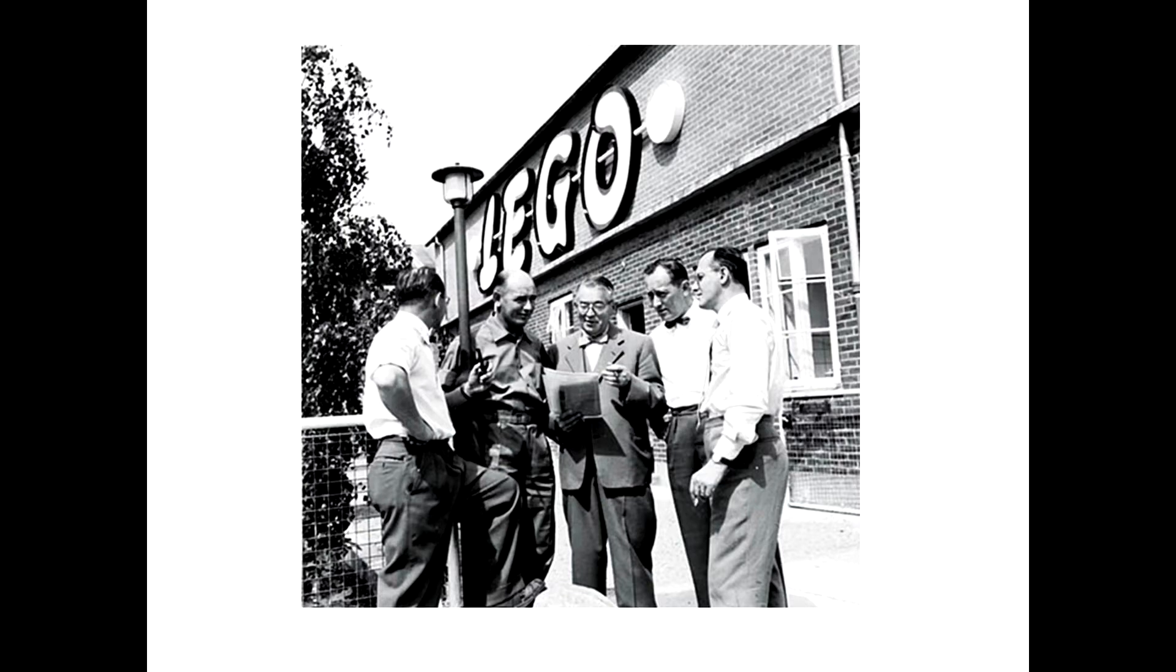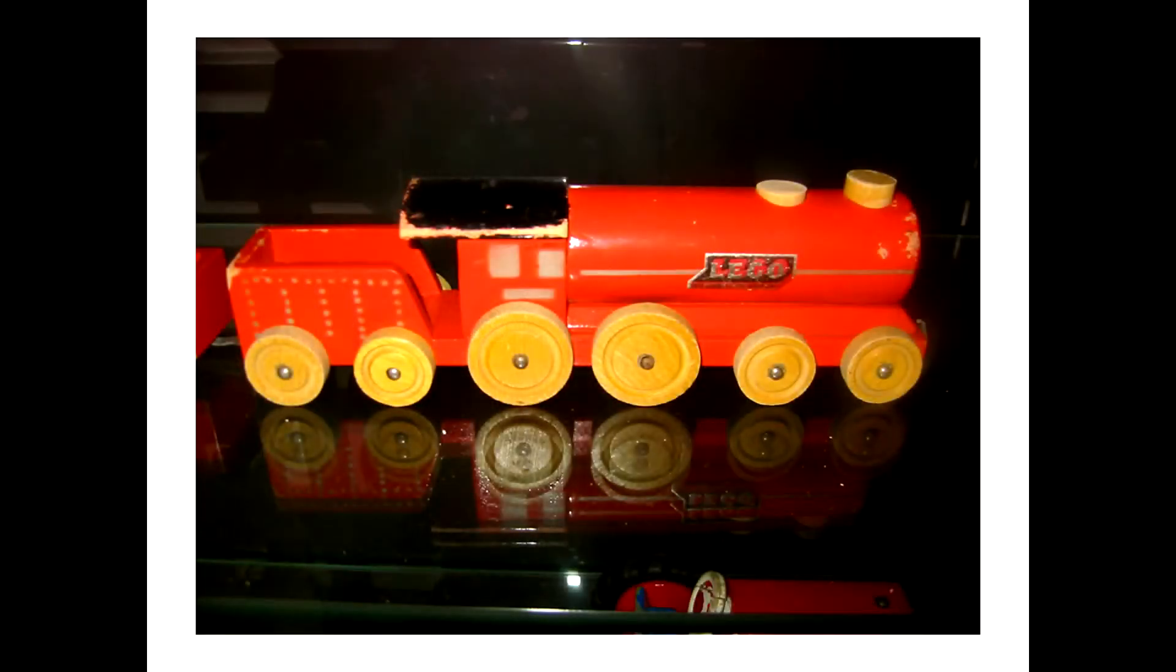In 1932, he does a very smart thing. He realizes that people will not buy wooden houses, but they will always buy things for their children. Lego actually began as a wooden toy company. They made trains, tractors, wooden ducks, and simple wooden toys. The issue with making wooden toys is wood is extremely flammable, and there were four separate fires at the factory.